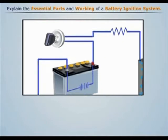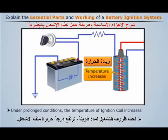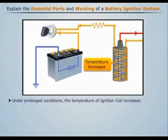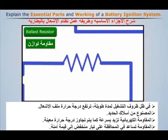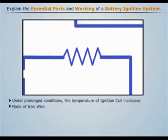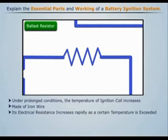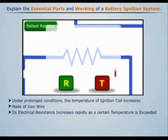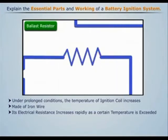Under prolonged operation of the engine, the temperature of the ignition coil increases, which can be dangerous. To prevent this, a ballast resistor made of iron wire is provided in series with the primary winding. Iron has a property that its resistance increases rapidly if a certain temperature is exceeded, thus the ballast resistor helps to keep the current down to a safe value.